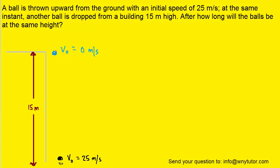So here we have the ball that's at the top of the building colored in blue. It is dropped from a height of 15 meters. Because it is dropped, its initial velocity will be 0 meters per second. At the bottom we have the ball that's being thrown upward and its initial velocity would be 25 meters per second.